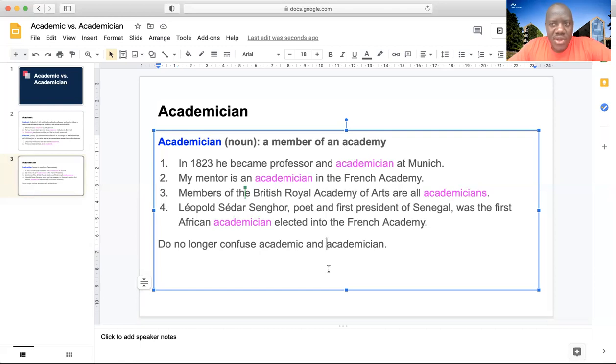An academic is someone, I'm talking about academic now as a noun, because as an adjective, it means relating to education, to schools and study, but as a noun, it means someone who researches and teaches in a university or a higher institution of learning,